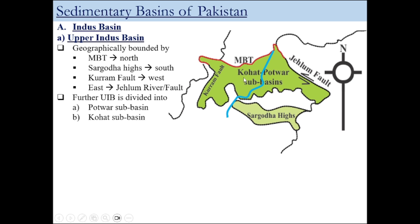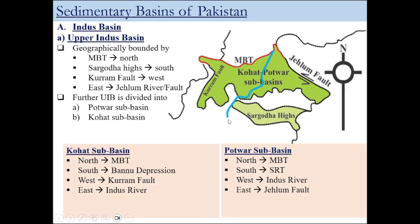The upper Indus Basin is further divided into two sub-basins: the Kohat sub-basin and the Potwar sub-basin. These two sub-basins are separated by a reference line — the Indus River — which divides them in the middle. The Kohat sub-basin is geographically bounded to the north by the MBT, to the south by the Bannu Depression, to the west by the Korat Plate area, and to the east by the Indus River. The Potwar sub-basin lies on the eastern side of the Indus River.